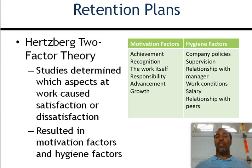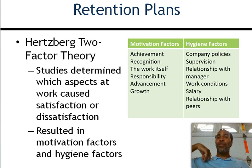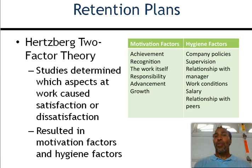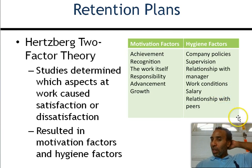Herzberg's two-factor theory: studies determined which aspects of work cause satisfaction or dissatisfaction, resulting in motivation factors and hygiene factors. Motivation factors include achievement, recognition, the work itself, responsibility, advancement, and growth. Hygiene factors are things that if absent would cause a problem, but if present you don't notice. For example, you don't walk into a room and say 'I'm so thankful we have air conditioning,' but if the AC is out you'll definitely notice. Hygiene factors include company policies, supervision, relationship with manager, work conditions, salary, and relationships with peers.